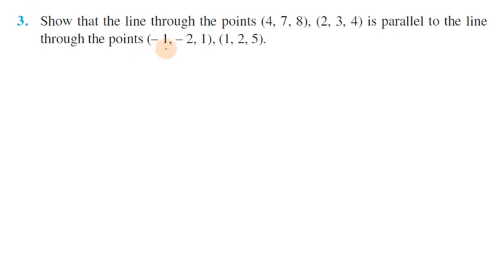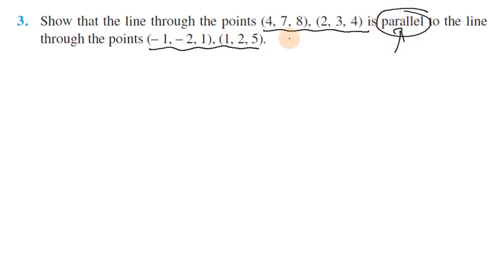Third question: Show that the line through the points (4, 7, 8) and (2, 3, 4) is parallel to the line through the points (-1, -2, 1) and (1, 2, 5). For parallel lines, the direction ratios must be proportional, not equal to zero.